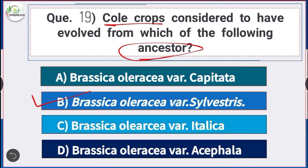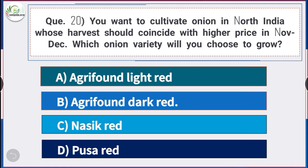Cole crops are considered to have evolved from the ancestor Brassica oleracea variety silvestris. Question number 20: If you want to cultivate onion in North India whose harvest should coincide with higher price in November-December, which onion variety will you choose? Answer is option B — Agrifound Dark Red.